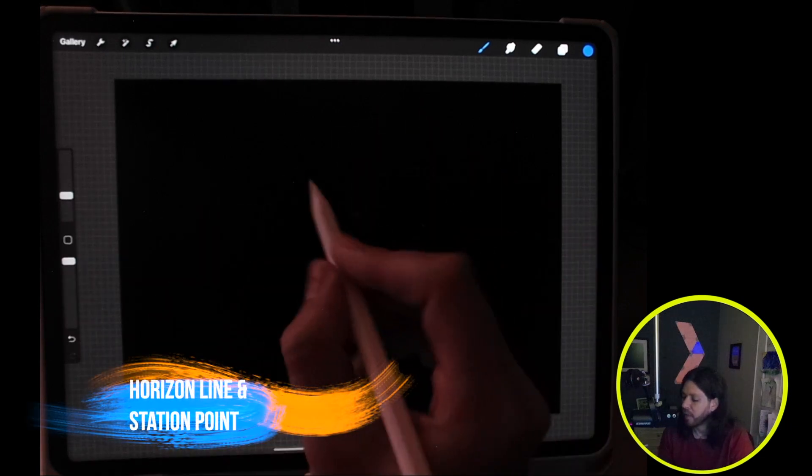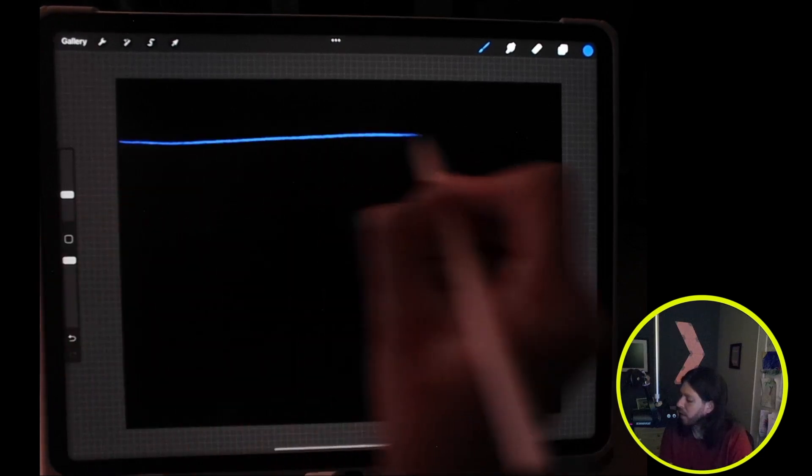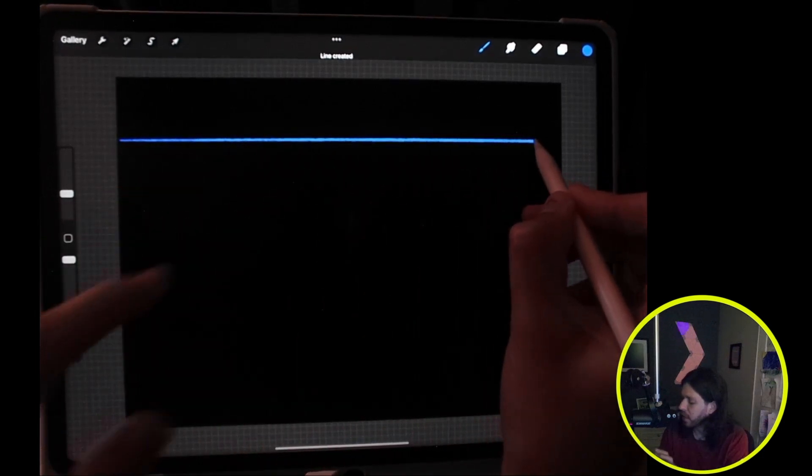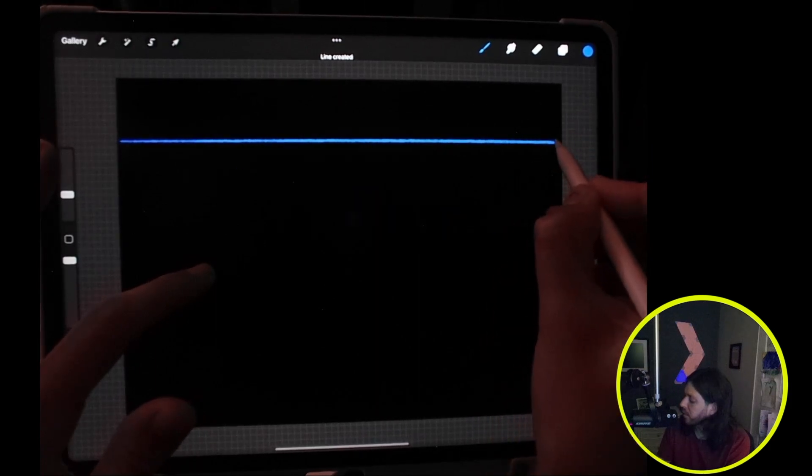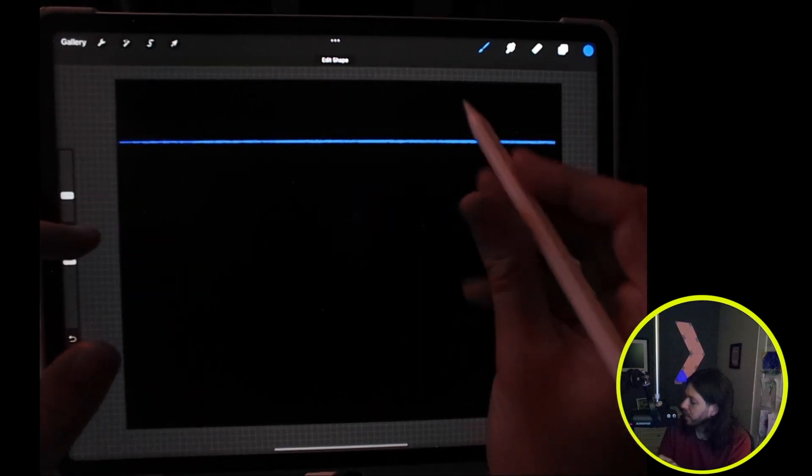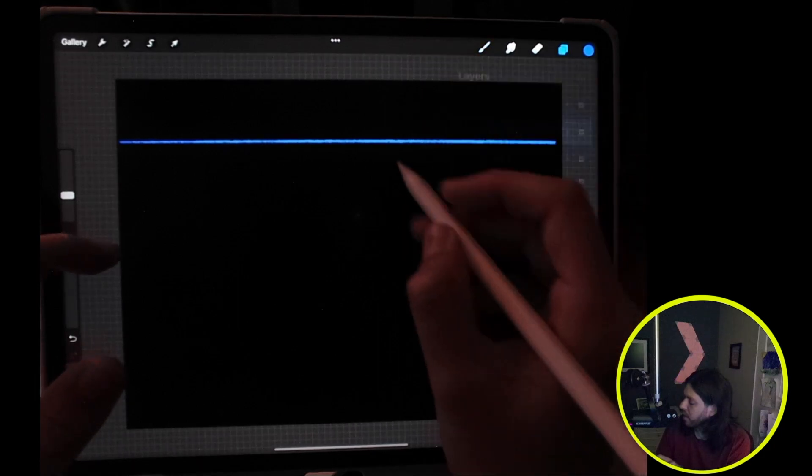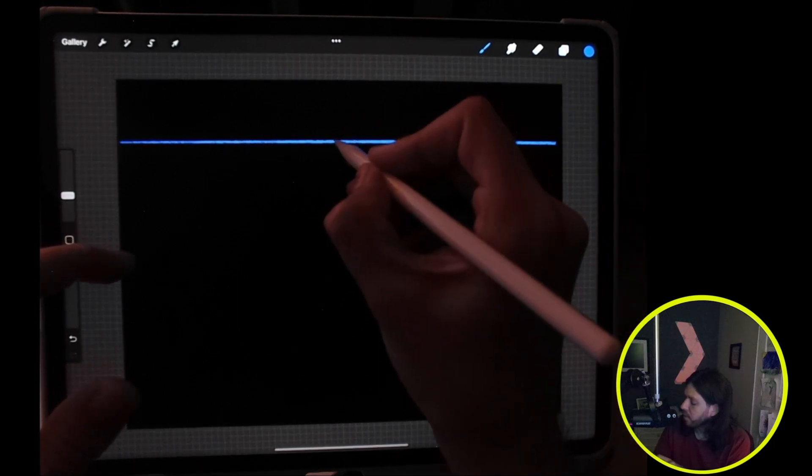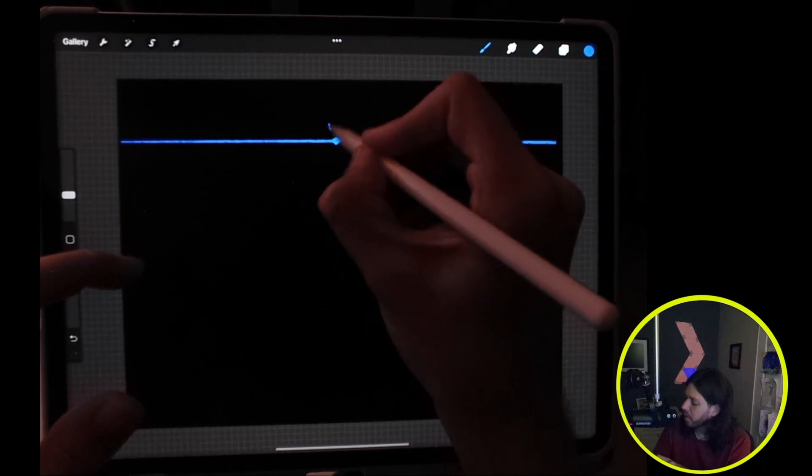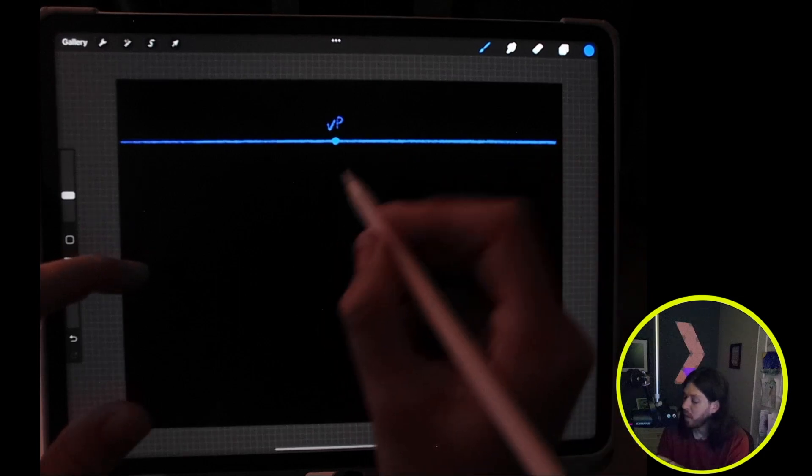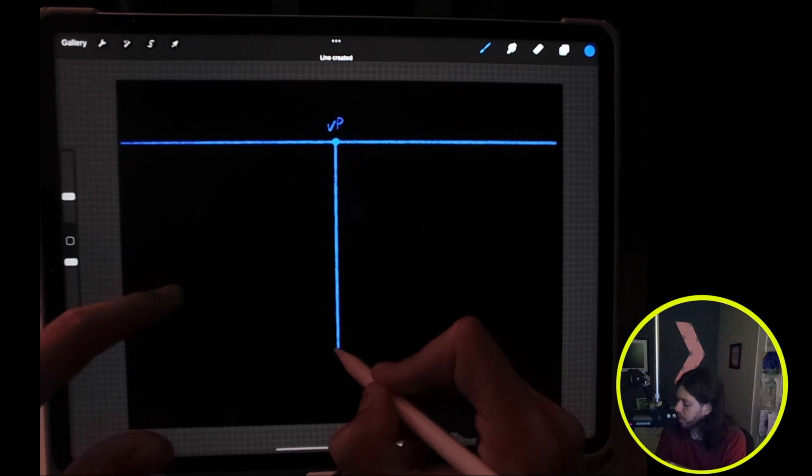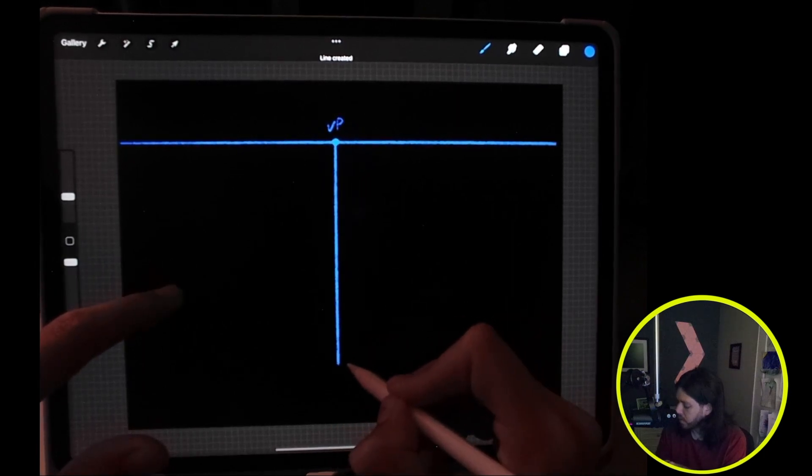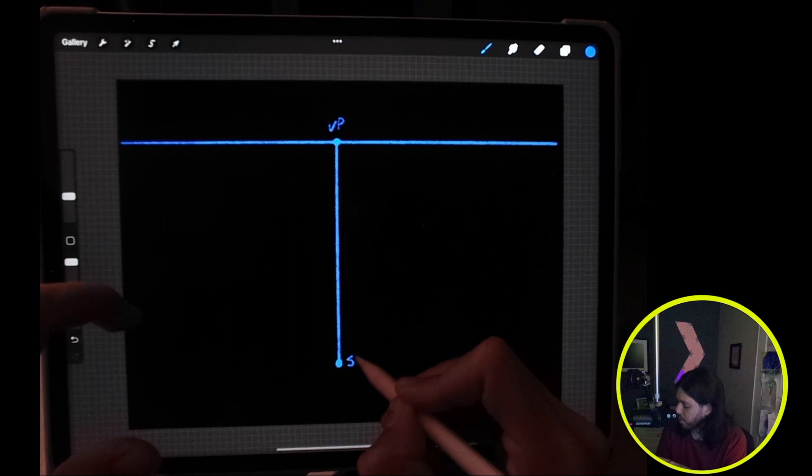All right, so what I have here is the first layer. I'm going to draw the horizontal line. If I hold my finger it'll snap, so I get a horizontal line. Then roughly in the center I will start with our one-point perspective vanishing point, and we'll come down from there with a vertical line. This will be our station point.